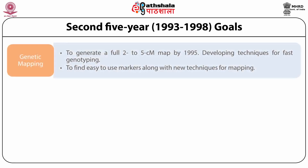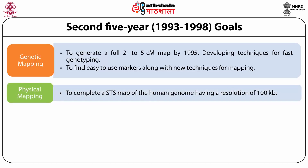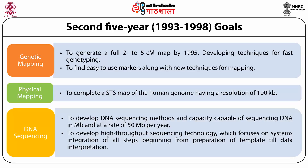The first goal was genetic mapping, which involved generation of a full 2 to 5 centimorgan map by 1995 and developing techniques for fast genotyping to find easy-to-use markers along with new techniques for mapping. Physical mapping involved completion of STS maps of the human genome having a resolution of 100 KB. DNA sequencing involved development of methods capable of sequencing DNA at a rate of 50 MB per year.